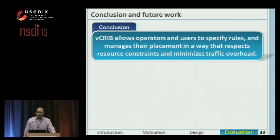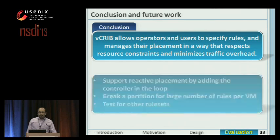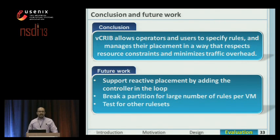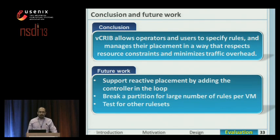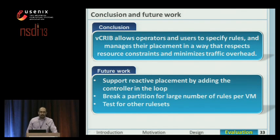In conclusion, VCRIP allows operators to specify rules and manage their placement in a way that respects resource constraints and minimizes the traffic overhead. For future work, we want to add the controller in the decision loop to let VCRIP decide which rules should be handled reactively at the controller and which rules should be handled proactively in the network. We also want to check the effect of breaking a large per-source partition and test our system for other rule sets.